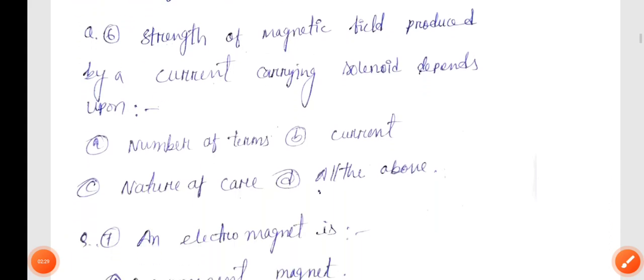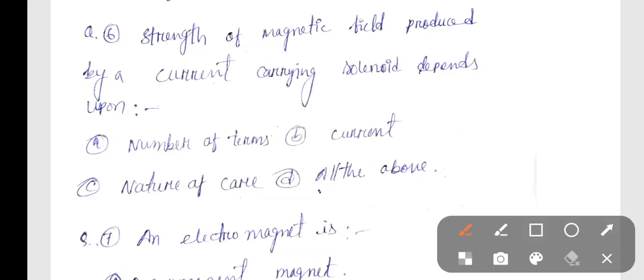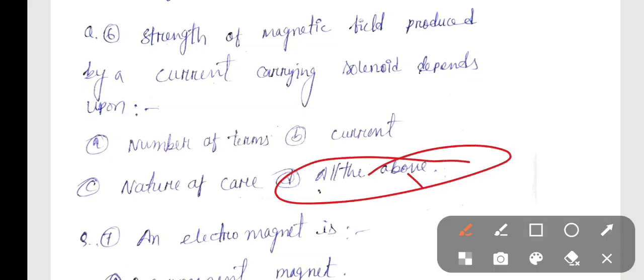Question number 6: Strength of Magnetic Field produced by a current-carrying solenoid depends upon? The correct answer is Option D — All of the above: number of turns, current, and nature of core.